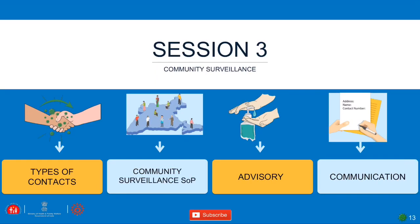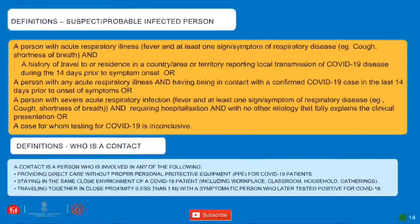Session 3 covers community surveillance: types of contacts, communication details, and how to conduct surveillance in the community. A suspect case is a person with acute respiratory illness — fever and at least one sign of respiratory disease such as cough or shortness of breath.